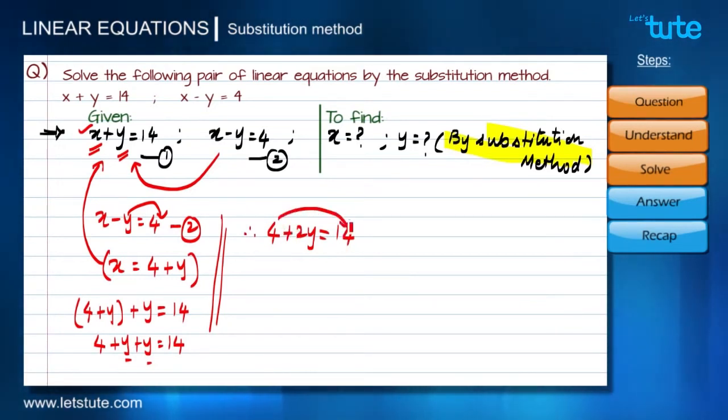Therefore 2y equals to 14 minus 4 is 10. So therefore we get y as 5.